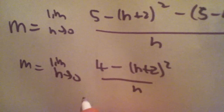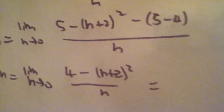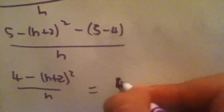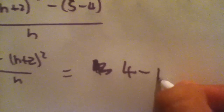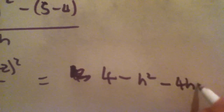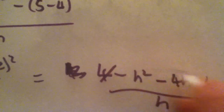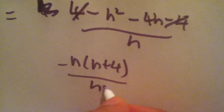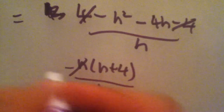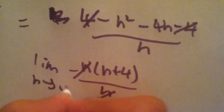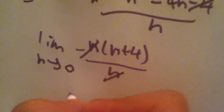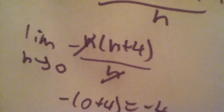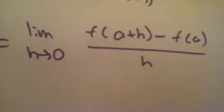Always remember to write the limit as h approaches 0. Expanding h plus 2 squared gives minus h squared minus 4h, and the two 4s cancel out. You can factor out the minus h to get minus h times h plus 4 over h. The h's cancel, and since this is the limit as h approaches 0, plugging in 0 gives minus 0 plus 4, giving the answer minus 4. So the slope m is equal to minus 4.